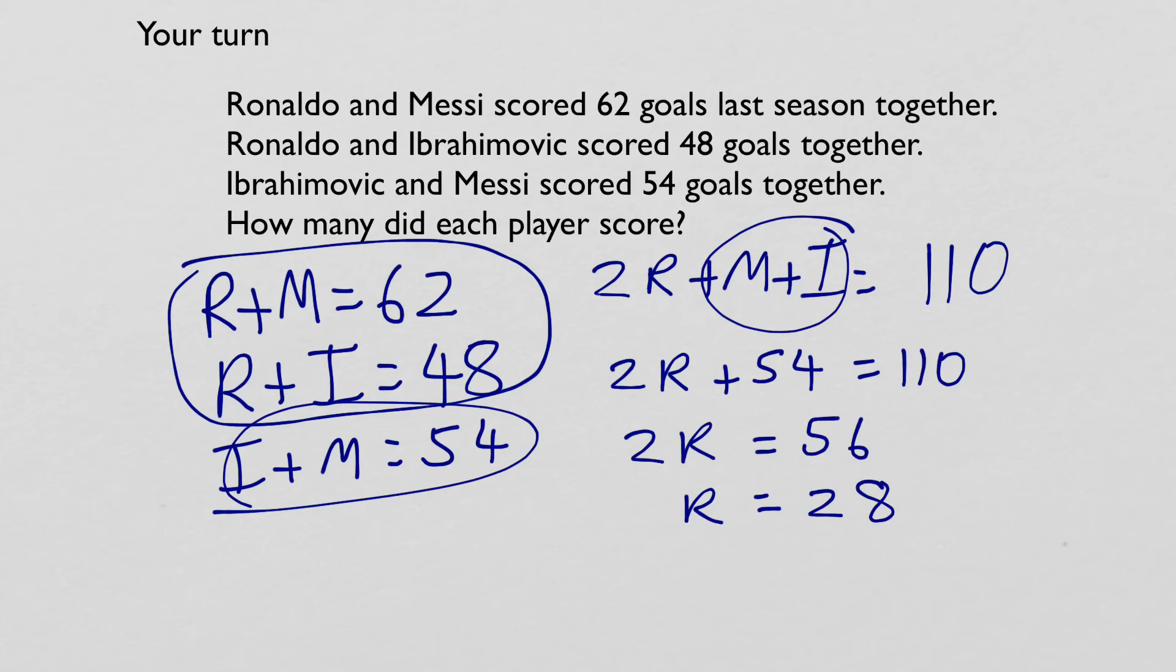And then once you know Ronaldo, you can find out Messi and Ibrahimovic. So if Ronaldo scored 28, then Messi scored 34. And Ibrahimovic scored 20. Well done if you got those correct.